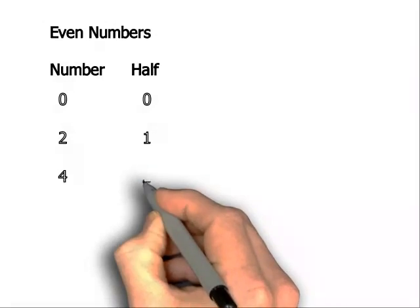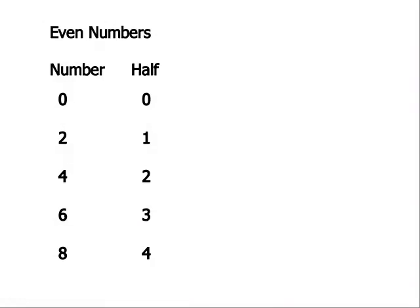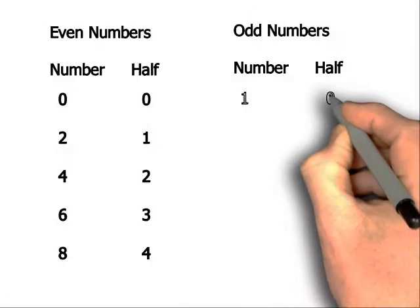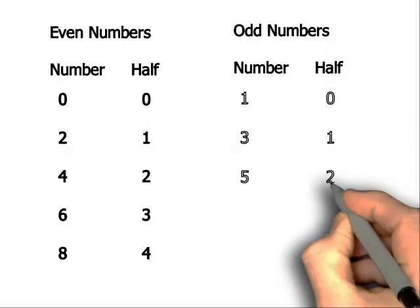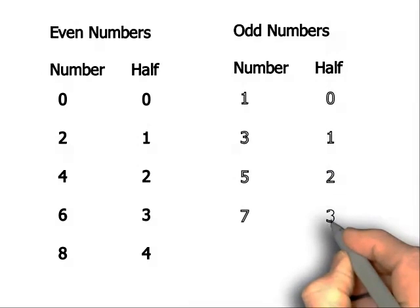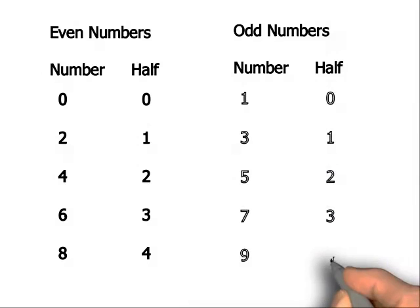Now this half of the neighbour is a true half for the even numbers 2, 4, 6, 8. But for the odd numbers we're just ignoring the decimal place. So for 1 it's 0, for 3 it's 1, for 5 it's 2, for 7 it's 3, and for 9 the half is 4.